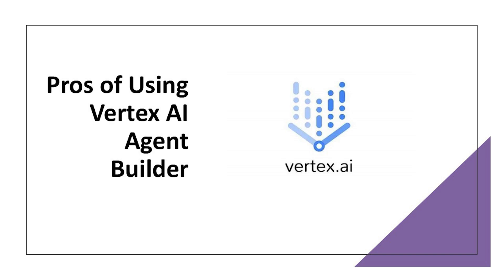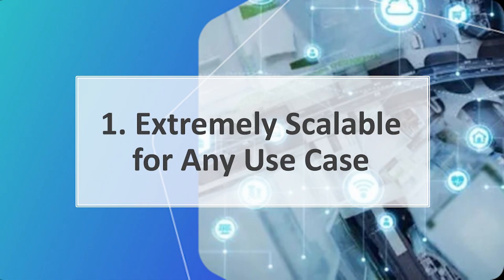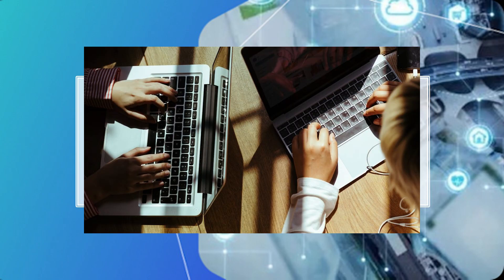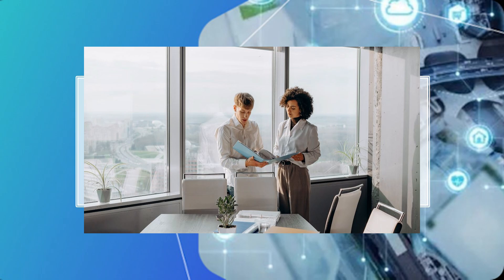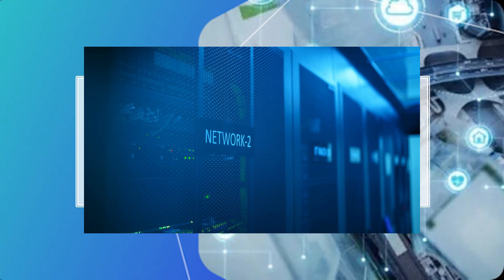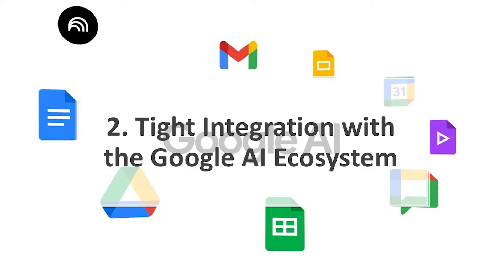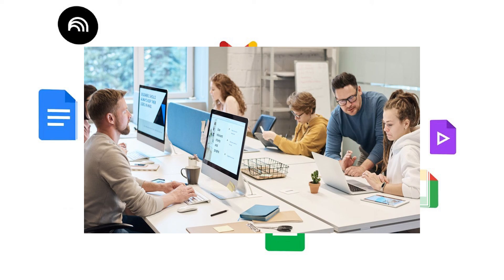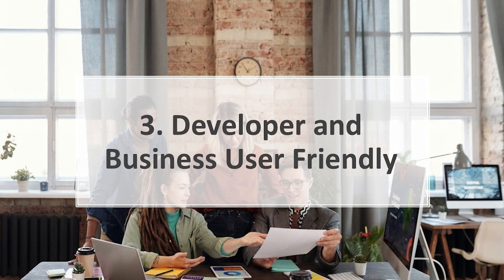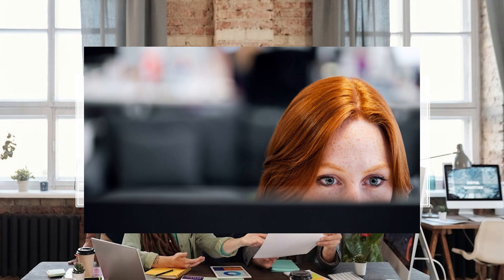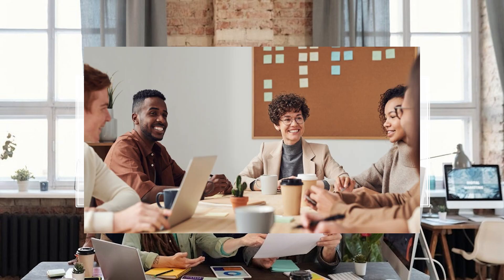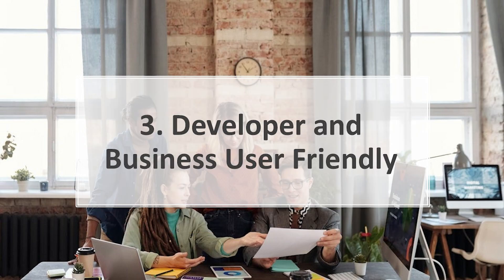Now let's review the pros of using Vertex AI Agent Builder. From startups to enterprises, the platform is designed to scale. Whether you're running a small chatbot or a complex enterprise automation agent, the infrastructure handles it all — you don't need to worry about provisioning servers or managing traffic spikes. That scalability makes it a future-proof solution for growth. If you're already using Google Cloud, this builder feels native; everything from authentication to storage and external calls is simplified, reducing setup time and eliminating extra middleware. Both technical and non-technical teams can work in parallel — developers can use APIs and SDKs for advanced use cases while business users build flows visually, avoiding bottlenecks and speeding up delivery.